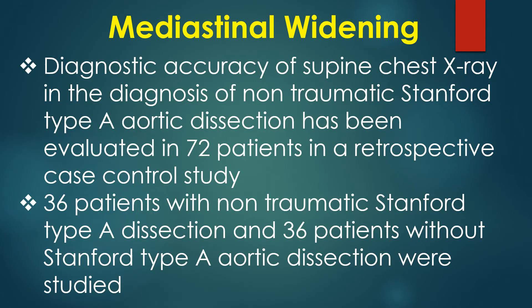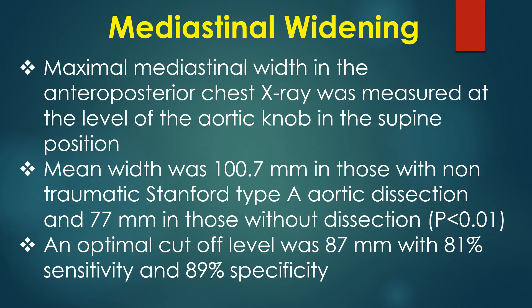Diagnostic accuracy of supine chest x-ray in the diagnosis of non-traumatic Stanford type A aortic dissection has been evaluated in 72 patients in a retrospective case-controlled study. 36 patients with non-traumatic Stanford type A dissection and 36 patients without Stanford type A aortic dissection were studied. Maximal mediastinal width in the anteroposterior chest x-ray was measured at the level of the aortic knob in the supine position.